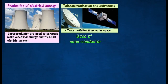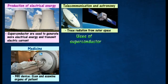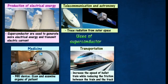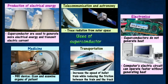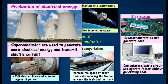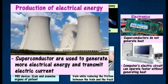Power transmission lines, electromagnets, and computer chips would be revolutionized by resistance-less materials. In nuclear reactors, electromagnets which are made from superconductors are used to generate more electrical energy.